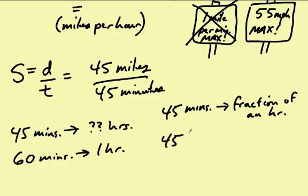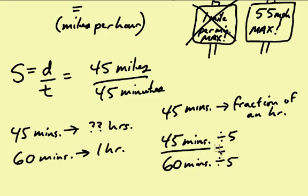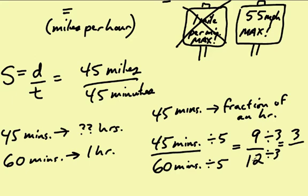So 45 minutes divided by 60 total minutes should give me the fraction of an hour. 45 and 60 both have a common factor - we'll say that's 5. 45 minutes divided by 5, that's just 9. And 60 divided by 5 is 12. I think I can take out some more factors. Let's take out a factor of 3. 9 divided by 3 is 3, and 12 divided by 3 is 4.